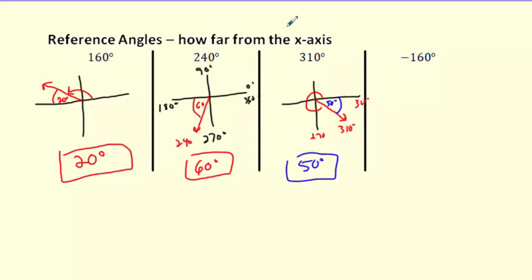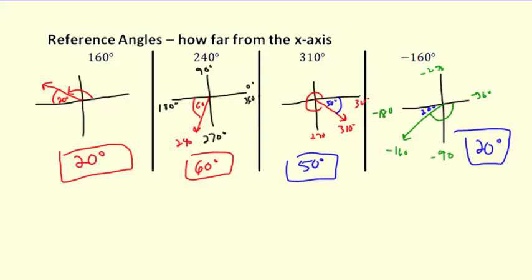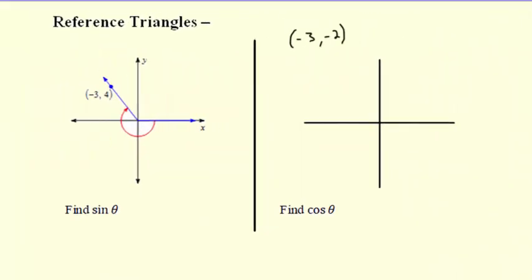We can also go in the negative direction. For negative 160°: negative 90, negative 180, negative 270, back to negative 360. Starting at zero and going to negative 160, how close is that to negative 180? That little leftover piece is just 20 degrees. We're just figuring out how far from the x-axis you are.